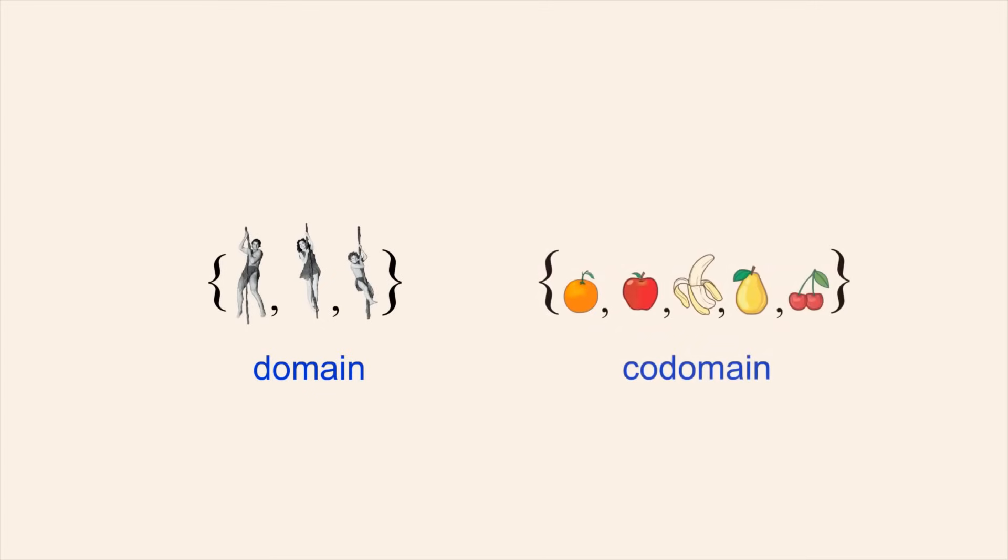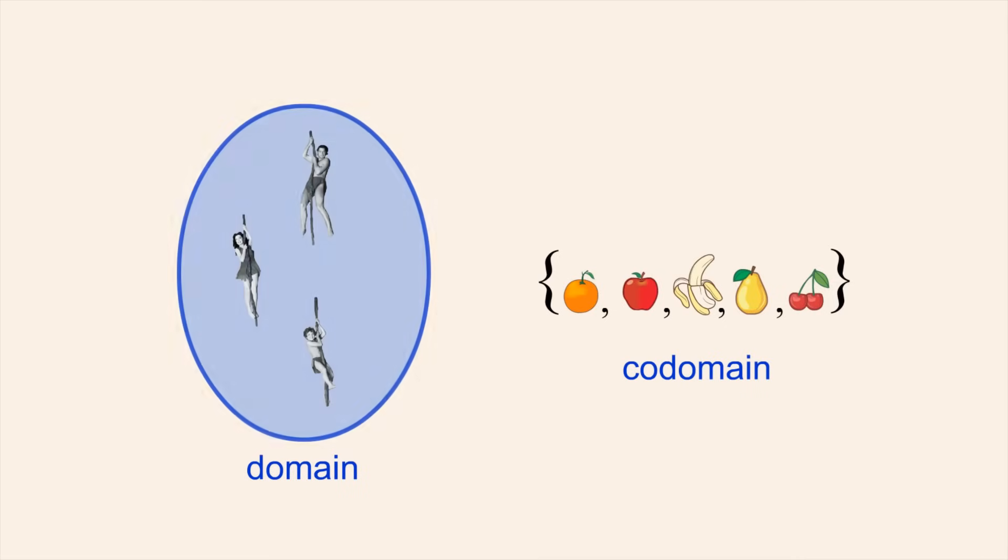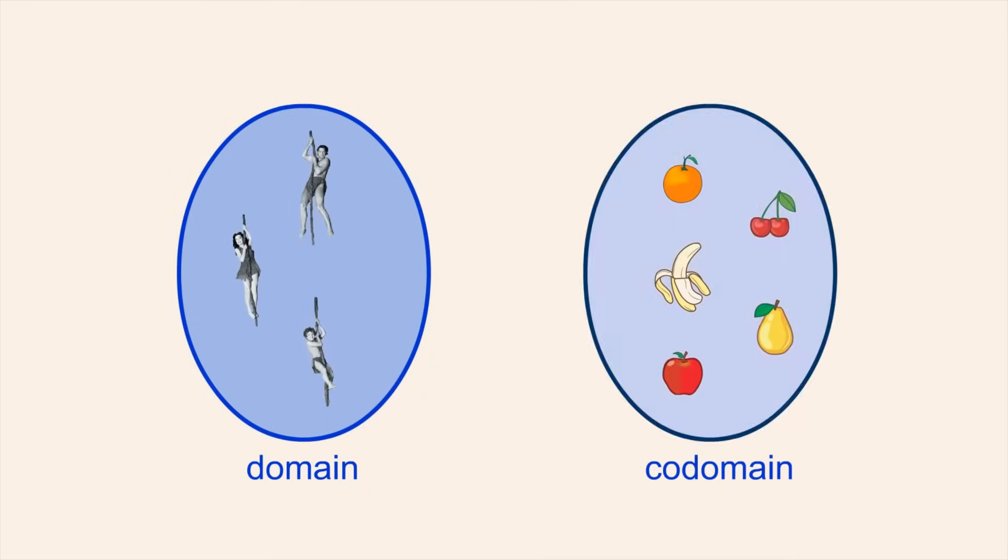For example, let's say that the domain contains Tarzan, Jane, and Boy, and the co-domain contains types of fruit. We could create a function which relates each person in the domain to their favorite fruit in the co-domain. For example, if each person had a different favorite fruit,